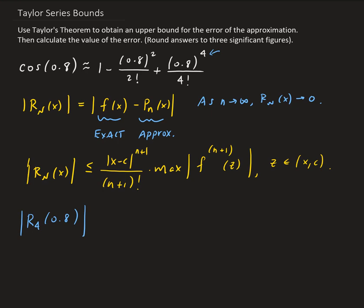But since we're taking the absolute value, the maximum value we can get from any derivative of cosine is always going to be 1, because the maximum of both cosine and sine is 1.